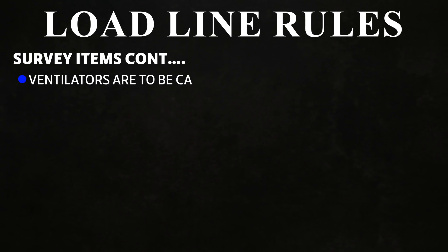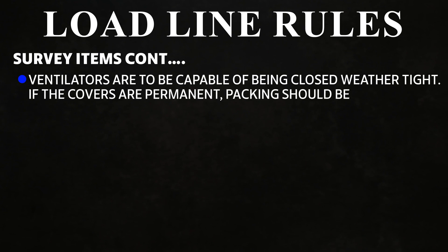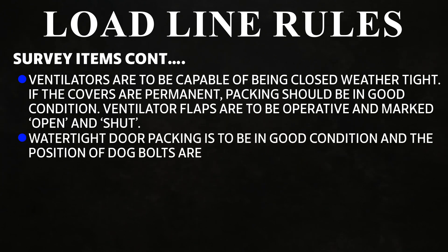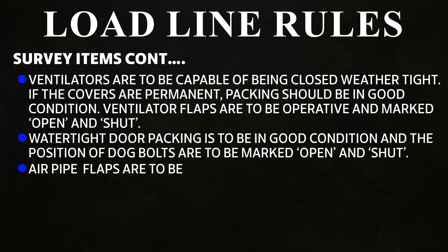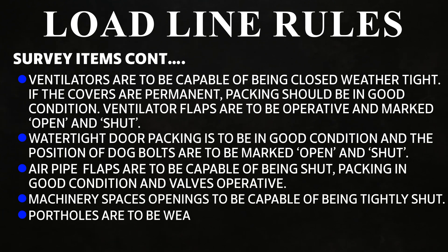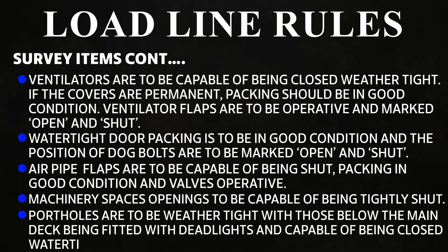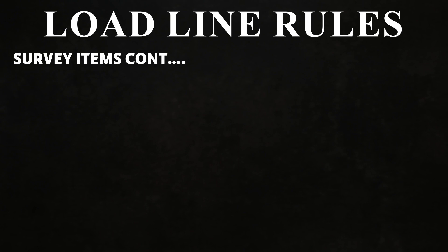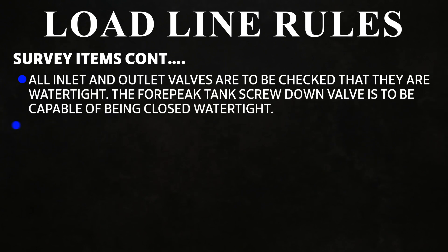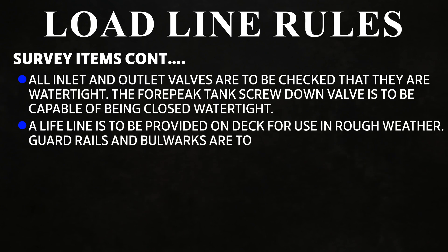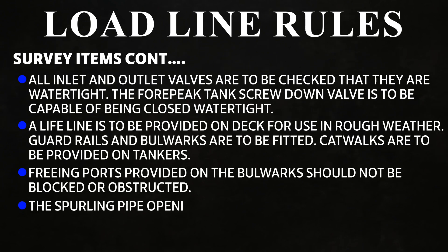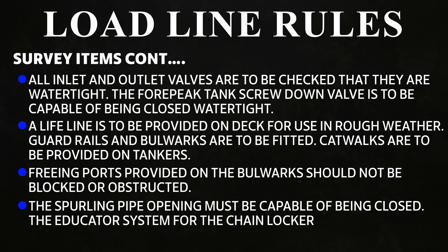Further survey items: ventilators are to be capable of being closed weather-tight; if covers are permanent, packing should be in good condition. Ventilator flaps are to be operative and marked open and shut. Watertight door packing is to be in good condition and dock bolt positions marked open and shut. Air pipe flaps are to be capable of being shut, packing in good condition and valves operative. Machinery space openings to be capable of being tightly shut. Port holes are to be weathertight, with those below main deck fitted with dead lights and capable of being closed watertight. All inlet and outlet valves are to be checked for watertightness. The fore peak tank screw-down valve is to be capable of being closed watertight. A lifeline is to be provided on deck for use in rough weather. Guard rails and bulwarks are to be fitted. Catwalks are to be provided on tankers. Freeing ports on bulwarks should not be blocked. The spiraling pipe opening must be capable of being closed. The eductor system for the chain locker and fore peak stores must be working.